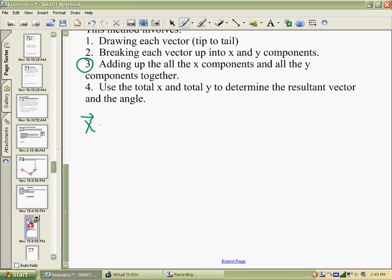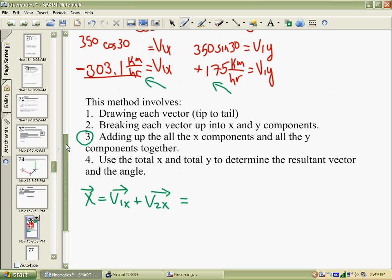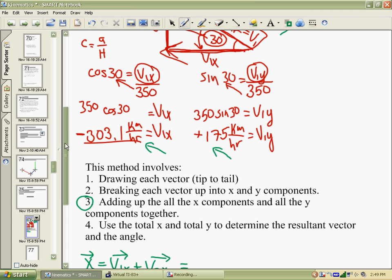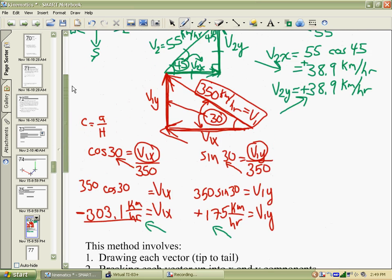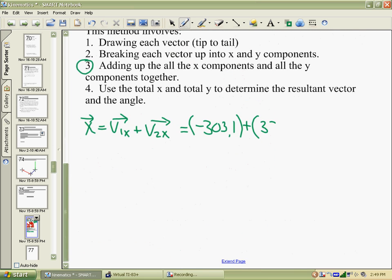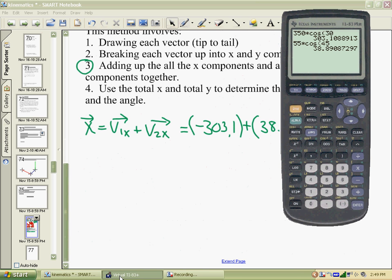To add up the x components, we will take V1x and V2x and add them up. Adding them as vectors means you've got to consider the direction. So V1x is a negative 303.1, and V2x was 38.9. We're going to add those up. We have negative 303.1 and 38.9, which gives us negative 264.2.